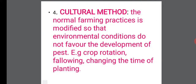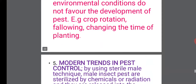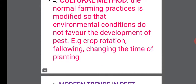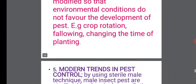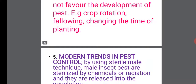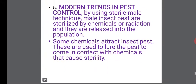Cultural method: normal farming practices are modified so that environmental conditions do not favor the development of pests. Examples include using crop rotation, fallowing, and also changing the time of planting.